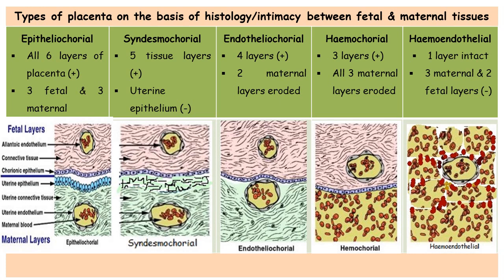The next type is hemochorial placenta. In this type, all three maternal tissues — uterine epithelium, uterine connective tissue, and endothelium of the uterine blood vessels — are eroded by the developing chorionic villi. The chorionic epithelium comes in direct contact with maternal blood. This type of placenta is found in humans, apes, and monkeys. In the case of humans, the type of placenta is hemochorial.